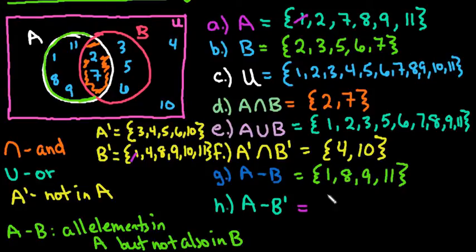So we can see that 2 is in A, but not in B naught. 7 is in A, but not in B naught. 8, 9, and 11 are also in B naught. So our answer to this one would just be 2 and 7. So we're looking for all elements in A, but not also in the set B naught. So 2 and 7. So this happens to be the overlap between A and B is really what we're looking for.